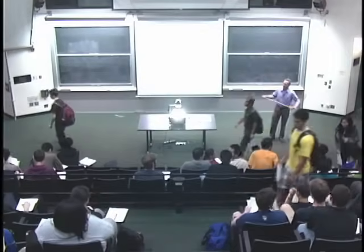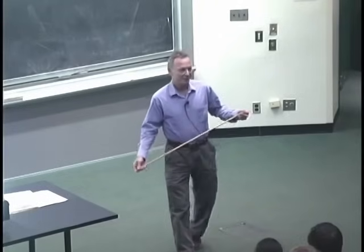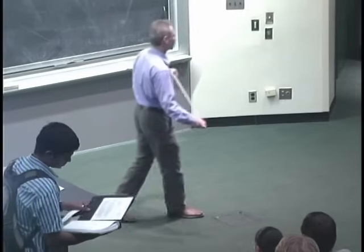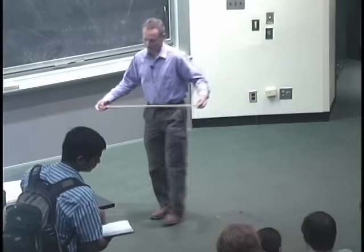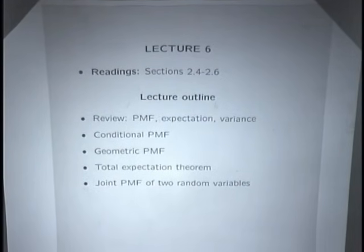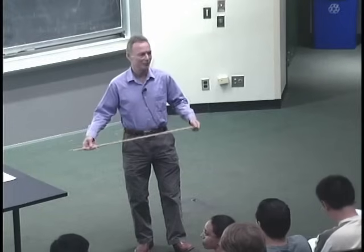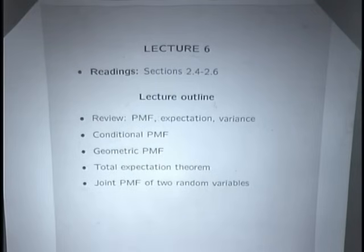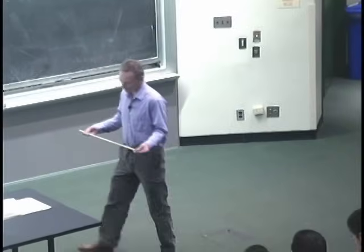Today we're going to continue the subject from last time: random variables. Random variables basically associate numerical values with the outcomes of an experiment. What's happening during this chapter is that we are revisiting the same concepts from chapter one with a lot of new notation. The only new concept beyond the notation is the concept of expectation or expected values, and we're going to learn how to manipulate expectations.